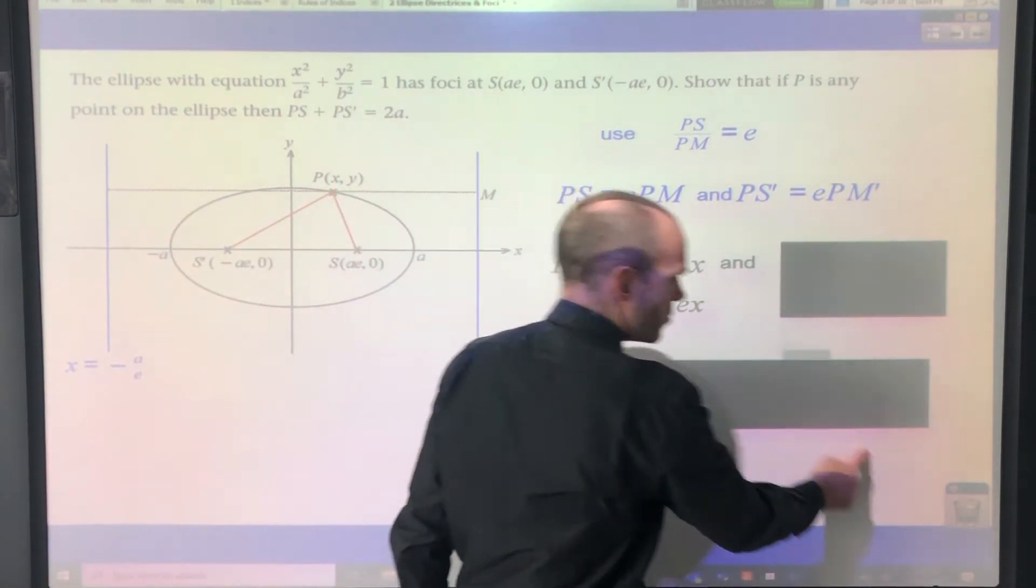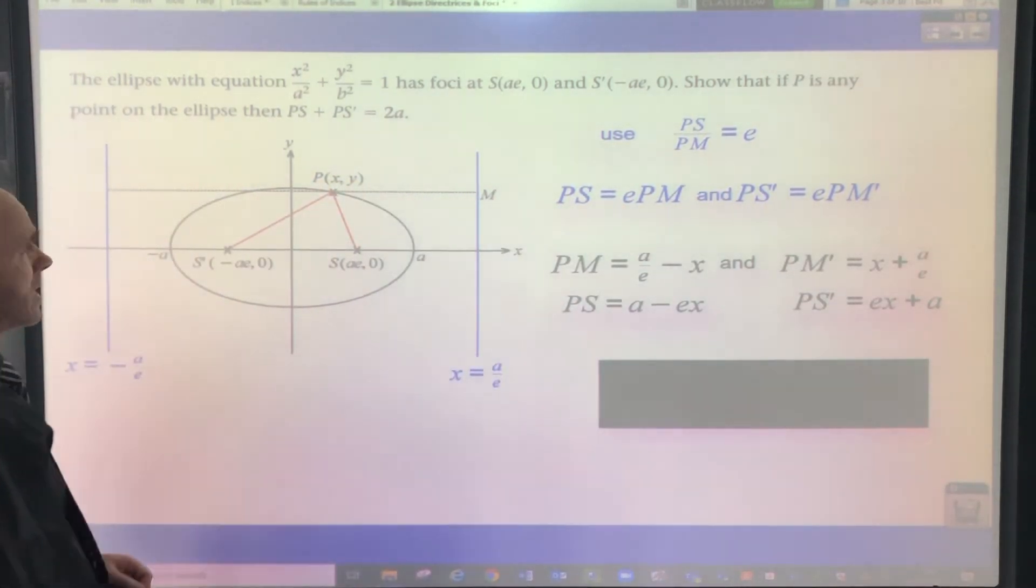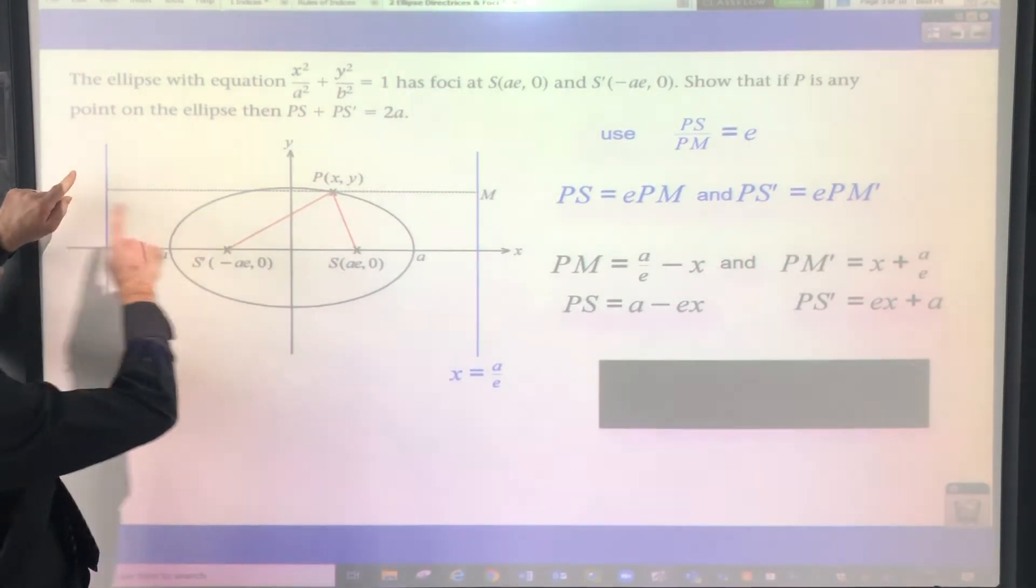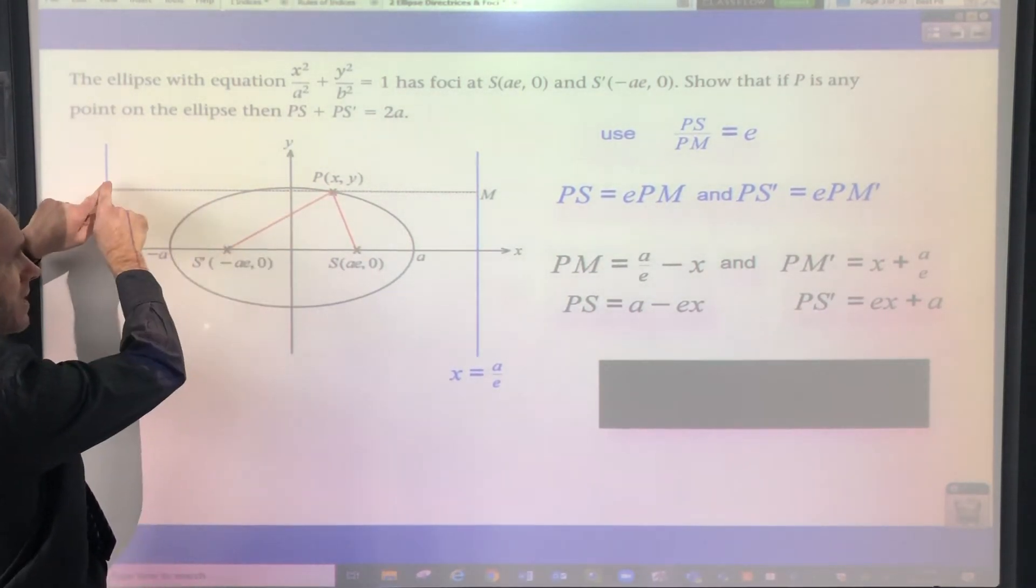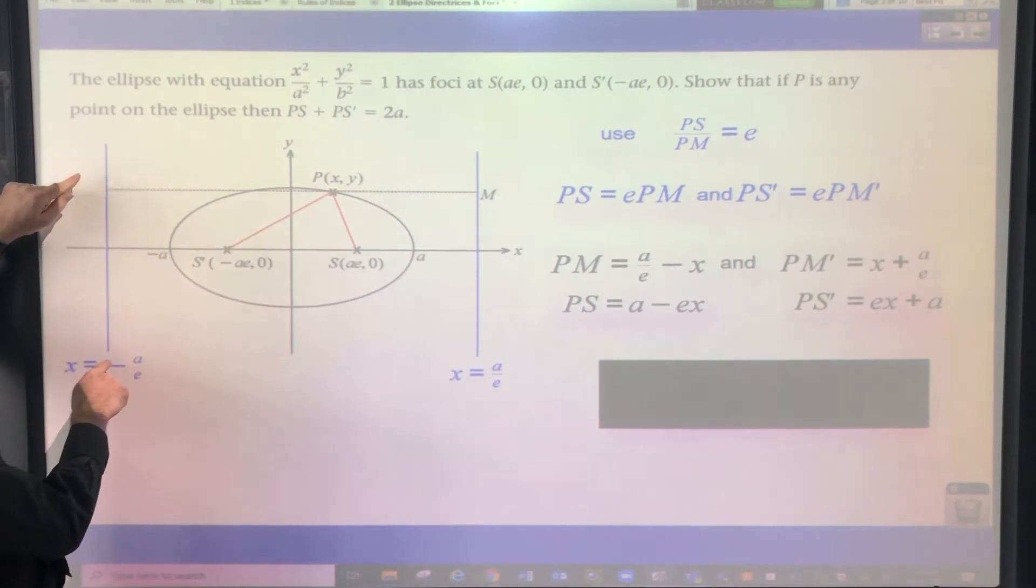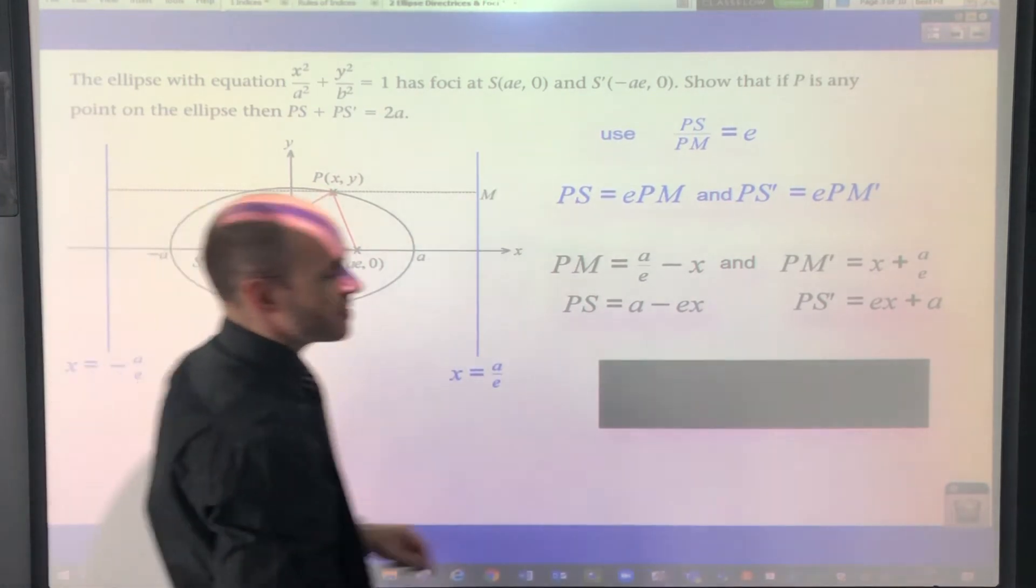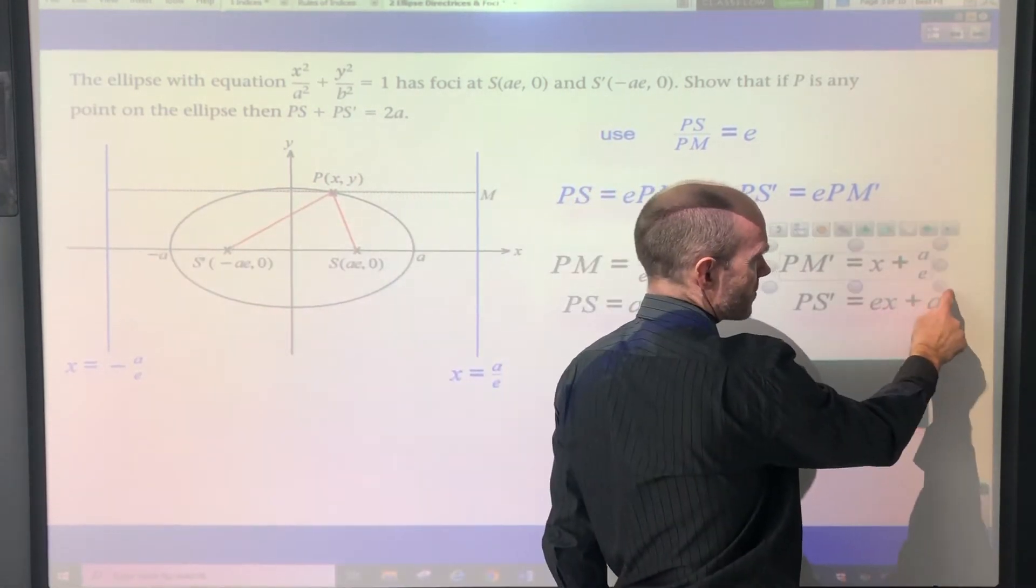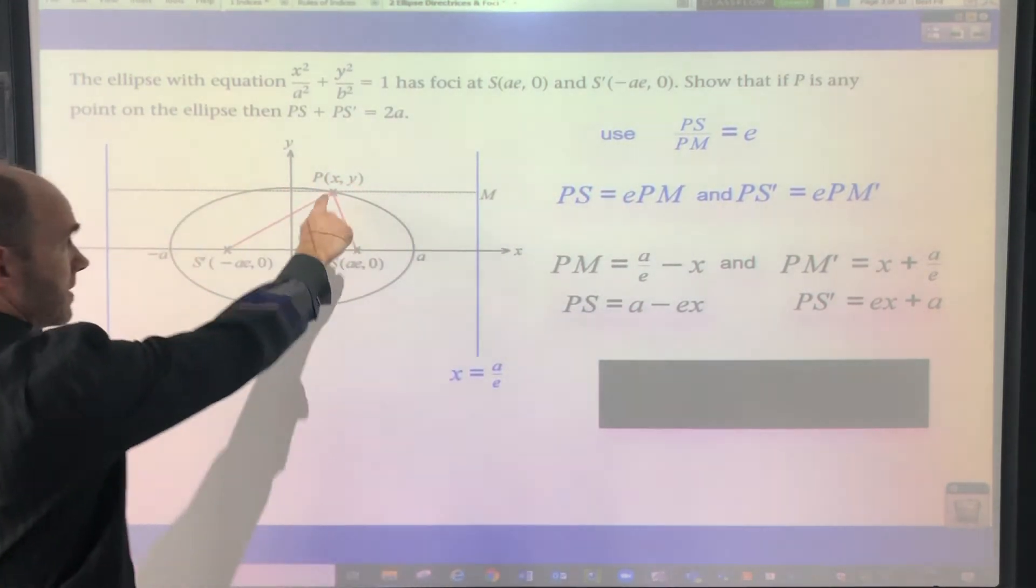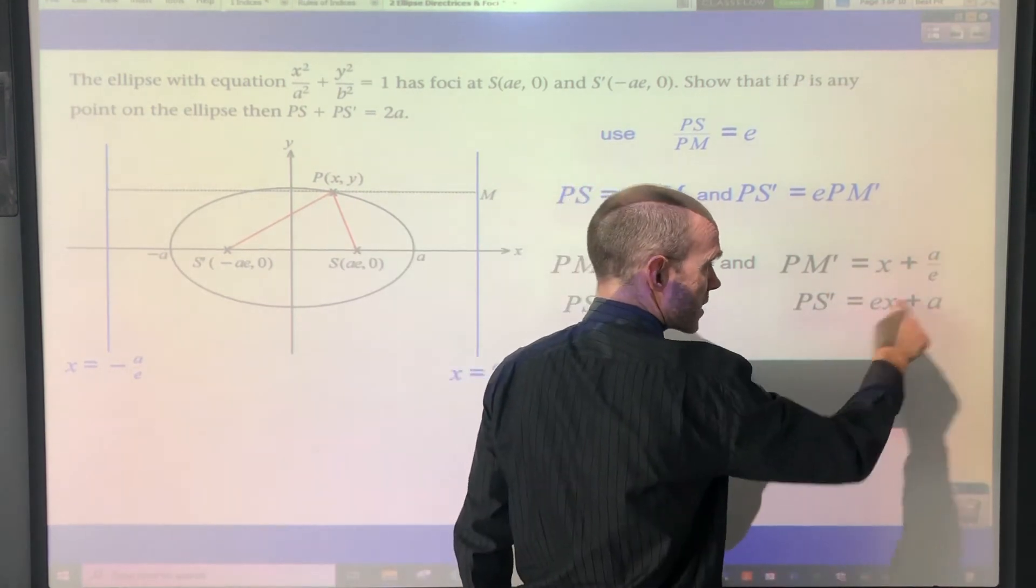And then you've got the similar result for PM dash. So PM dash is going to be, I'm not sure why I didn't label that, but that's M dash. Sorry for that. That's PM dash there. So you can see that's going to be all of that, which is a over e, so that length plus the x-coordinate, hence x plus a over e. Let me make that fraction a little bit bigger. And then PS dash, so it's effectively this bit there, is going to be e multiplied by that. So e times that, ex plus a.